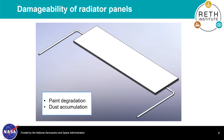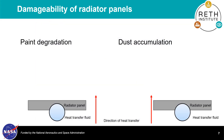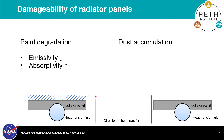Radiator panels with degraded paint surface will radiate less energy but instead absorb more from the environment. This situation is reflected in the code by reducing the emissivity and increasing the absorptivity parameters of the radiator panels.